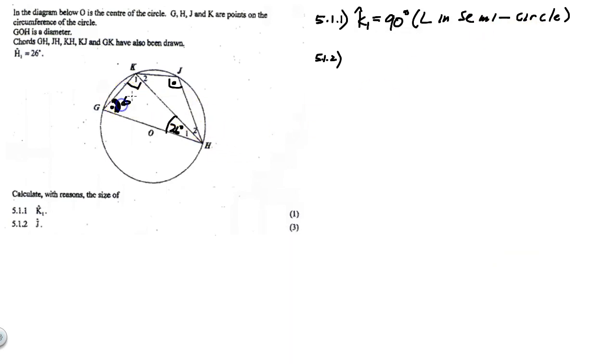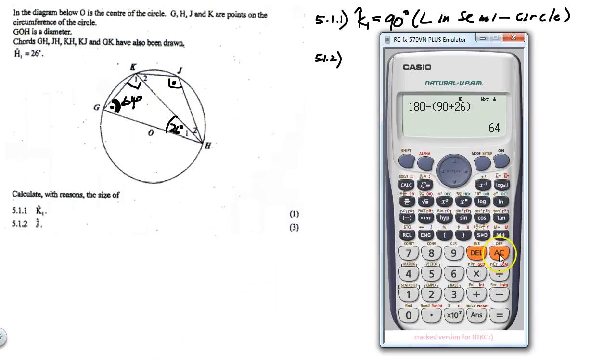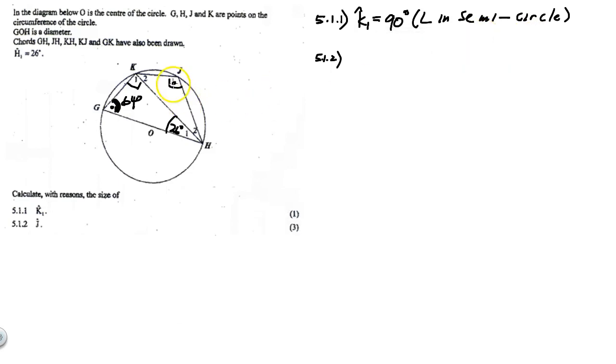And then thereafter, 180 minus 64 equals to 160 degrees. So that's equal to 160 degrees. Now we can write our statements out.